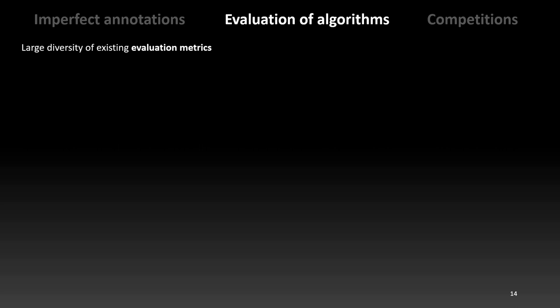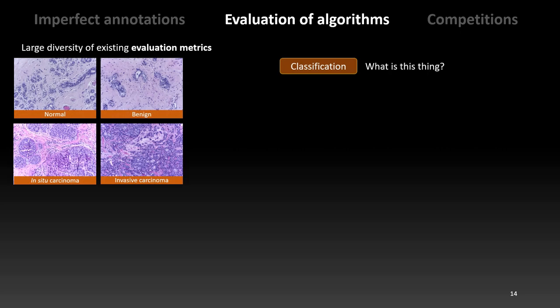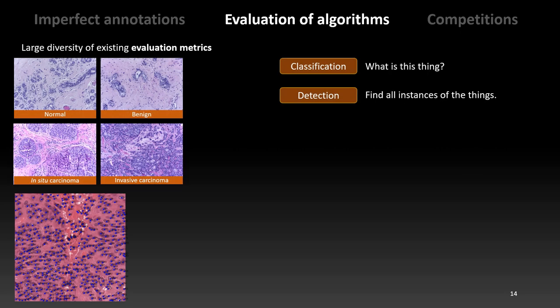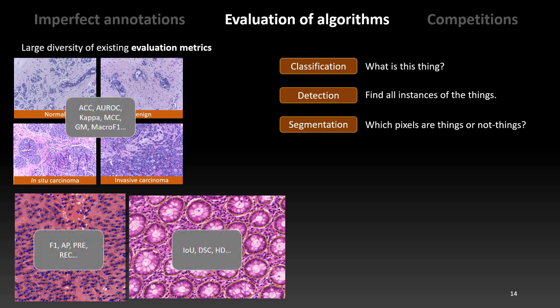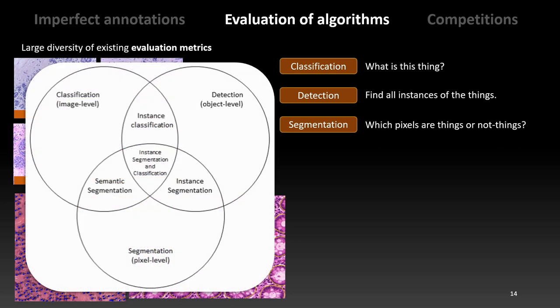So, what can we do? Well, fortunately, there are many evaluation metrics available to us. These metrics are generally related to the definition of the image analysis task. In our work, we surveyed digital pathology competitions and publications, and we categorized the most common image analysis tasks using three different basic tasks: classification, what is this thing? Detection, find all instances of things. And segmentation, find which pixels are things or not things. In each of these basic tasks, there are many different commonly used metrics. More complex tasks can generally be defined as combinations of the three basic ones, and similarly, more complex metrics tend to take the form of combinations of these basic metrics.